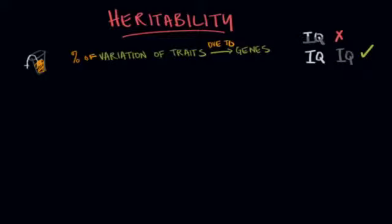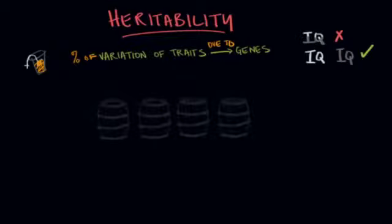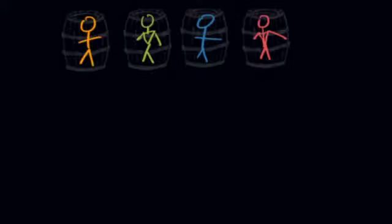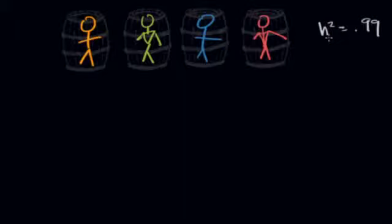A favorite example of heritability comes from Mark Twain: suppose you raised four boys in barrels until age 12, feeding them the same diet, controlling their environments 100%. By age 12 their IQs would probably be lower than the general population, but they're probably not all the same. Differences in their intelligence couldn't be attributed to the environment at all—we'd say their IQ differences were nearly 100% heritable because environments were nearly 100% the same. H² (heritability) would be close to 100%.